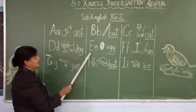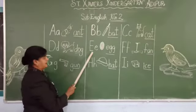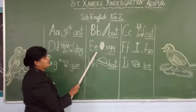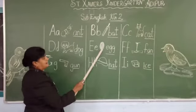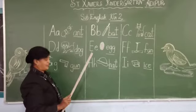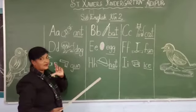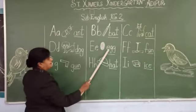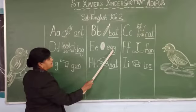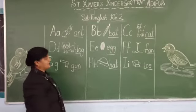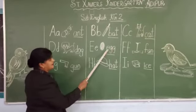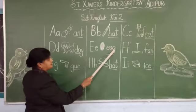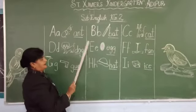After D comes E. This is your capital E, small e. E is for egg. Spell egg: E, G, G. Egg. Come on, say it again. E, G, G. Egg.